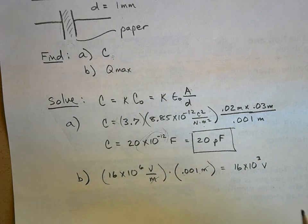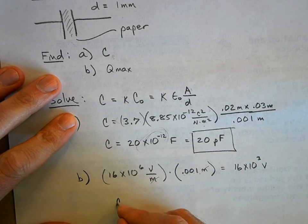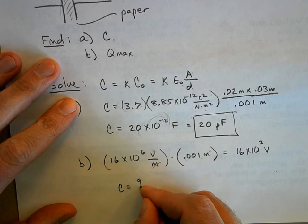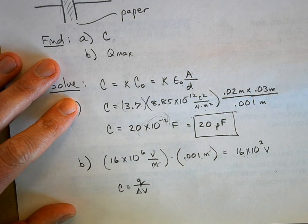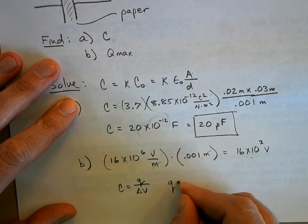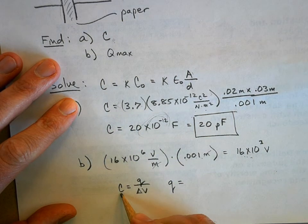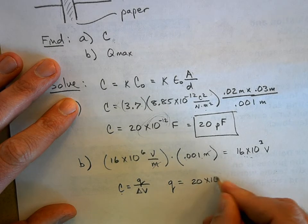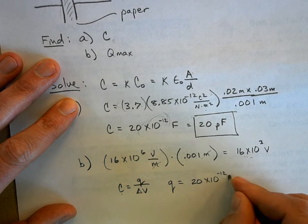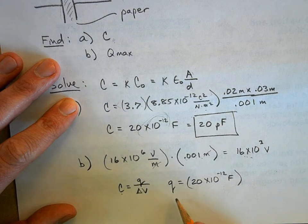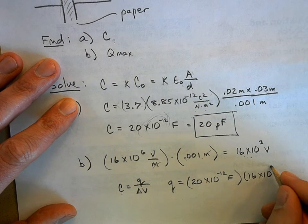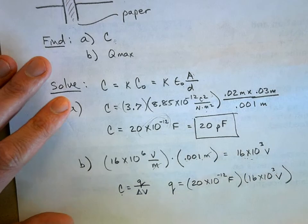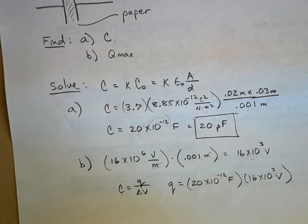Well, now I can figure out what the maximum charge is because I know that C equals Q over delta V. Well, I know the maximum delta V is 16,000 volts. So Q is going to be equal to C, which is 20 times 10 to the negative 12 farads times delta V, which is 16 times 10 to the 3 volts.